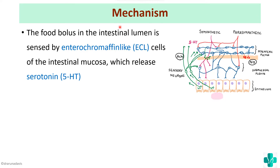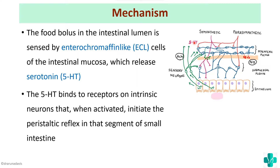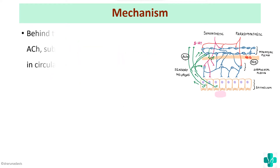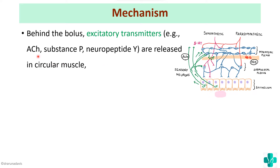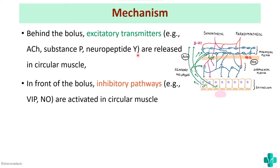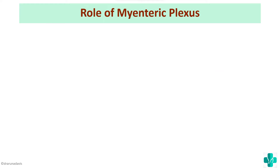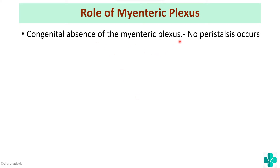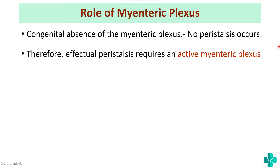The food bolus in the intestinal lumen is sensed by enterochromaffin-like cells of the intestinal mucosa, which release serotonin. Serotonin binds to receptors of intrinsic neurons, initiating the peristaltic reflex. Behind the bolus, excitatory neurotransmitters — acetylcholine, substance P, and neuropeptide Y — are released in the circular muscle, while in front of the bolus, inhibitory pathways involving nitric oxide and vasoactive intestinal peptide are activated. A congenital absence of myenteric plexus, as in Hirschsprung's disease, results in no peristalsis.